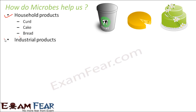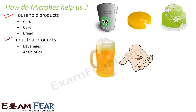They also help in a lot of industrial products — products which are prepared on a commercial scale in industries — like beverages and antibiotics. Antibiotics are a boon to us. Antibiotics are used to get rid of diseases, and diseases are also caused by microorganisms. So on one hand we have harmful organisms which cause diseases, and on the other hand we have helpful microorganisms which help in preparing antibiotics that cure those diseases.